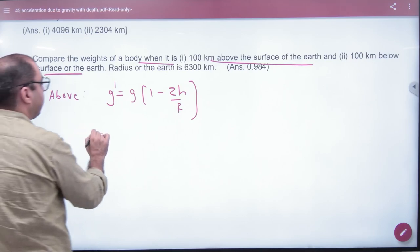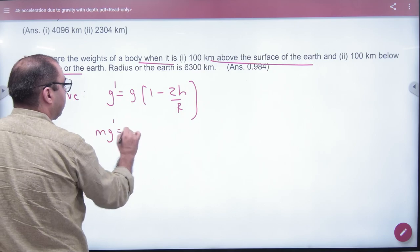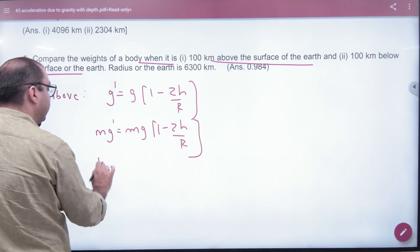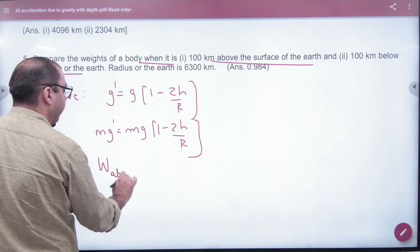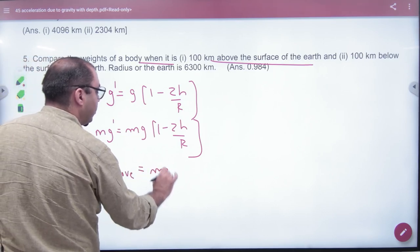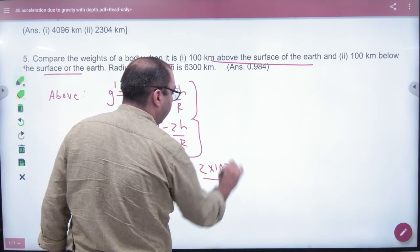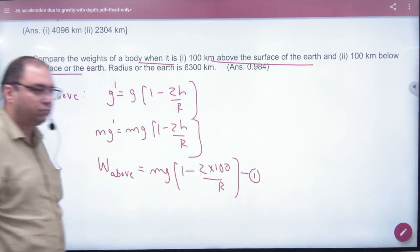What do we need for weight? Weight equals mg(1 - 2×100/R). This is equation number 1.